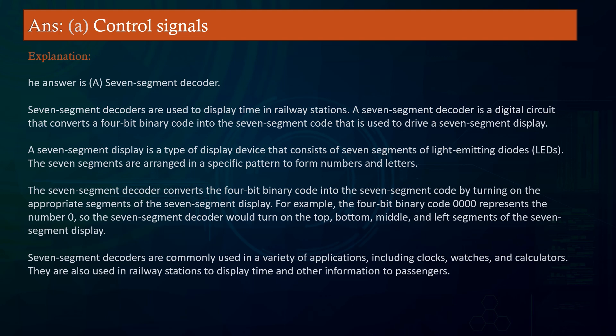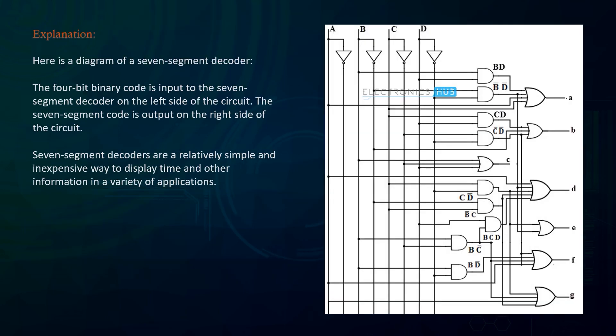For example, the 4-bit binary code 0000 represents the number 0, so the 7-segment decoder turns on the top, bottom, middle, and left segments. 7-segment decoders are commonly used in clocks, watches, calculators, and railway stations to display time and other information. They are a relatively simple and inexpensive way to display information in a variety of applications.